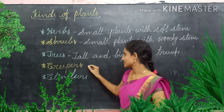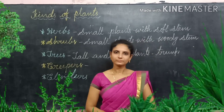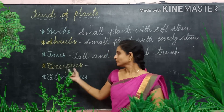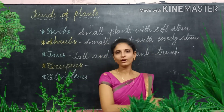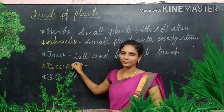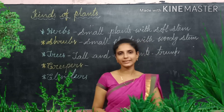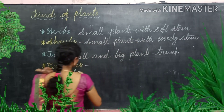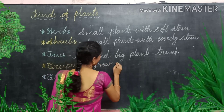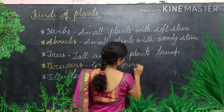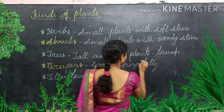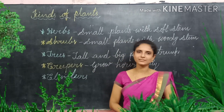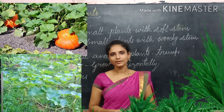The fourth type is creepers. Some plants have a very weak stem and are unable to grow vertically, so they grow horizontally along the ground. Such plants are called creepers. Examples of creepers are pumpkin, bottle gourd, and watermelon.